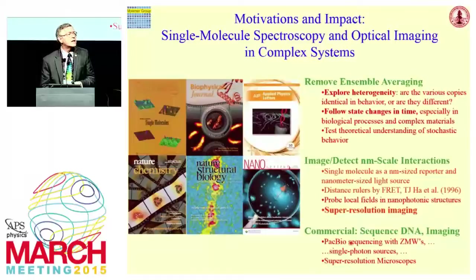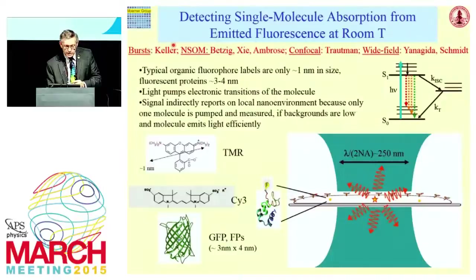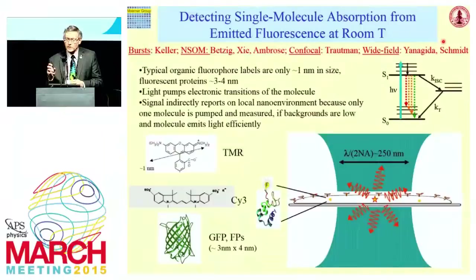There are even some commercial applications now, with companies using single molecule imaging for DNA sequencing and other ideas. Just to make sure everyone is on the same page in terms of how these experiments are now done at room temperature: important strides were made in the room temperature regime in the 90s — bursts of fluorescence from the Keller lab, near-field imaging by Betzig and Shea and Ambrose, confocal imaging, wide-field imaging, and so forth. A lot of people began to show that you could see fluorescence from single molecules by a variety of methods.